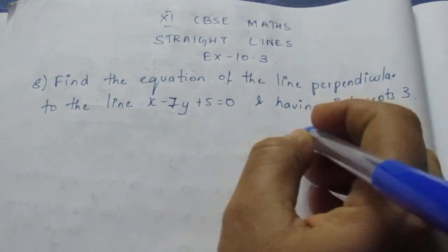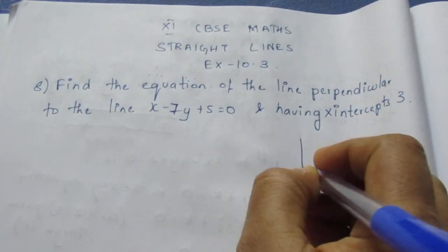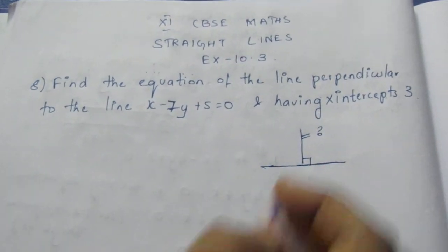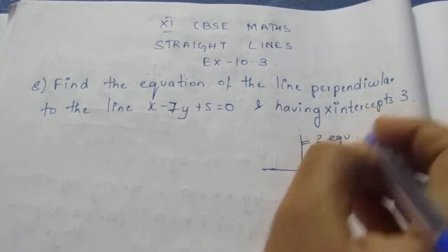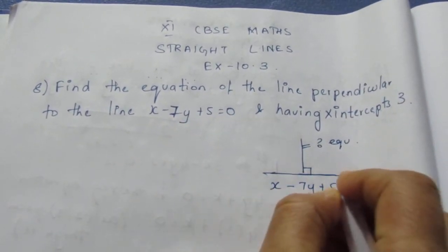Now they have given an equation of a line perpendicular to the line. Perpendicular means it will be 90 degrees. Let me take this equation to be found, and the line equation is x minus 7y plus 5 is equal to 0.